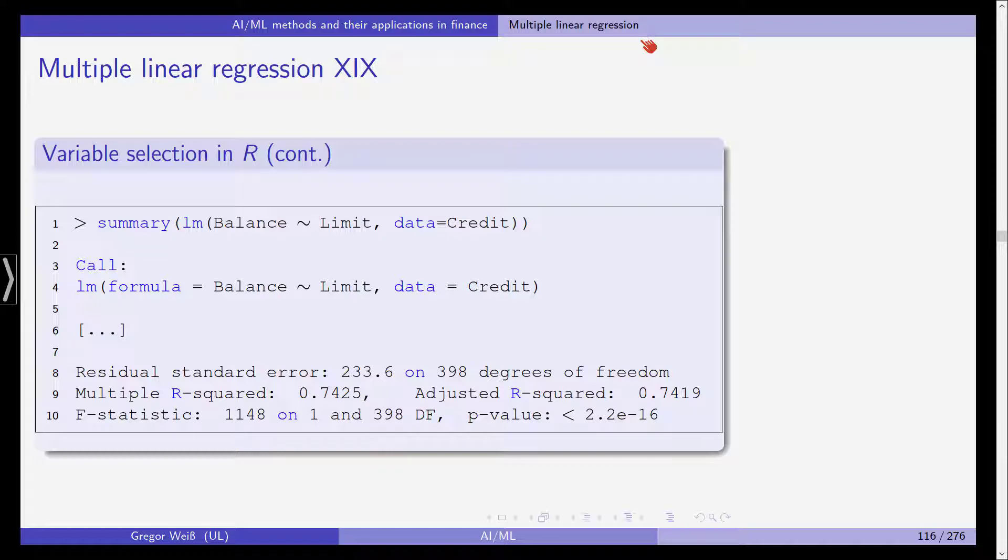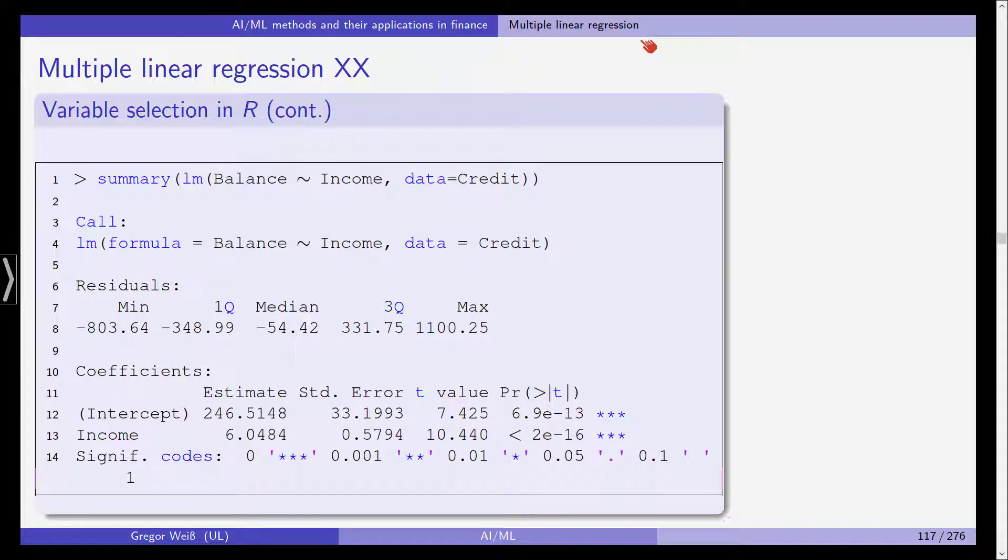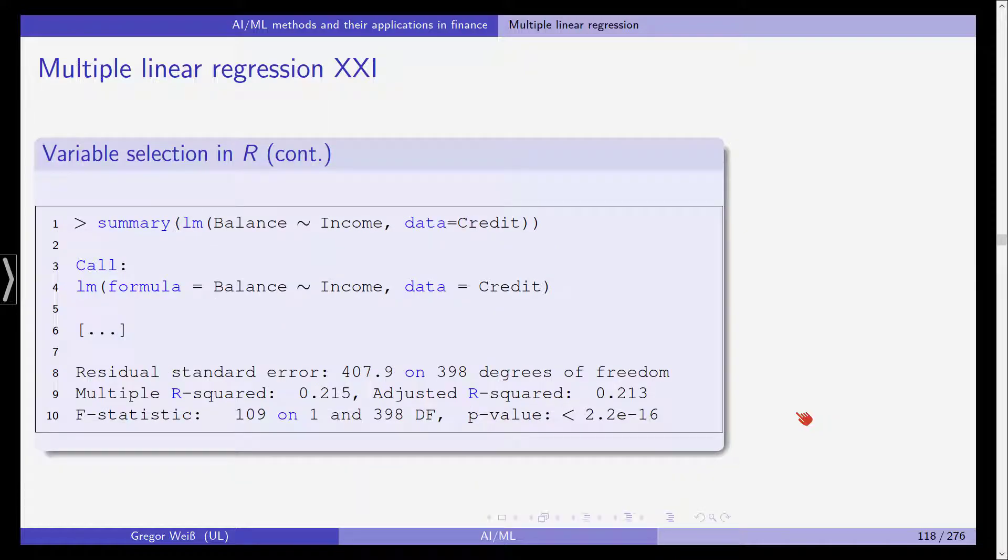So we should, if we were to choose, we should include limit rather than student. If we can include just one more variable, we should also include student. And last but not least, the same for income, high t-value, statistically significant. You can see here we have three stars. We have a t-value of almost 10, and an R squared of 21% should also include this in our regression.